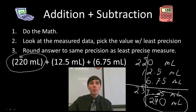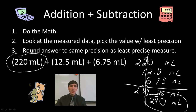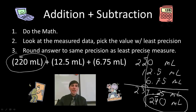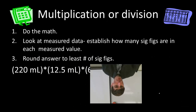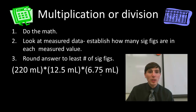Next we look at multiplication and division problems. The main rule is the same: whatever your weakest measurement is, if you have a bad measurement going in, you'll have a bad final answer coming out. Our final answer can only be as good as our weakest link. For multiplication and division, we start by doing the math, but we need to look at the measured data and count how many sig figs are in each number first.